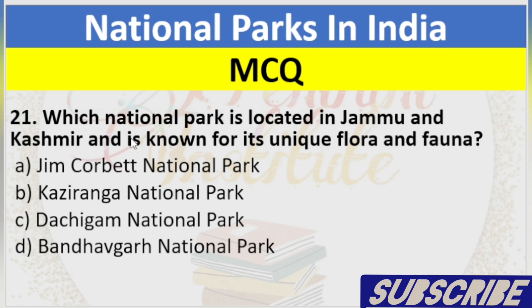Question 21: Which National Park is located in Jammu and Kashmir and is known for its unique flora and fauna? A. Jim Corbett National Park, B. Kaziranga National Park, C. Dachigam National Park, D. Bandhavgarh National Park. Answer: C. Dachigam National Park.